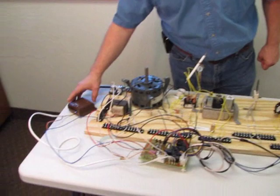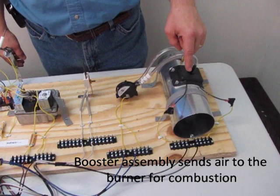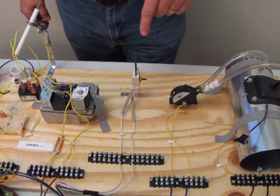So let's turn on the thermostat, make it call for heat. The first to come on is the booster assembly, and what it does is it sends air to the burner. When it's on, it trips this pressure switch.